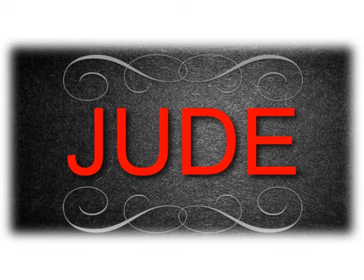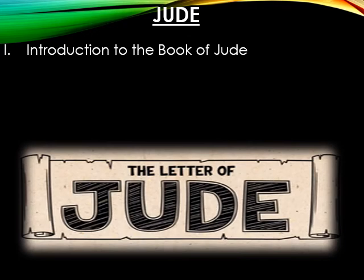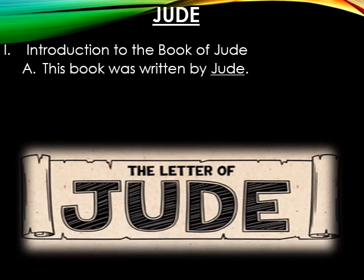The last book in today's lecture is the book of Jude. This book was written by Jude, the brother of James — the same James from Acts 15 and the writer of the book of James. That means Jude was a half-brother of Jesus, just like James. It is assumed that Jude was not a believer until after the resurrection.